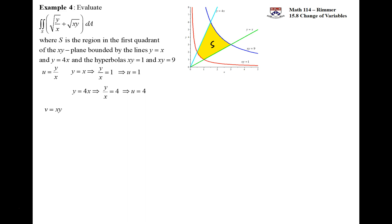When it comes to these hyperbolas, if xy is 1, that means v is 1, and if xy is 9, that means v is 9. So v is going to be between 1 and 9. So it turns out we end up with a very nice rectangular region.